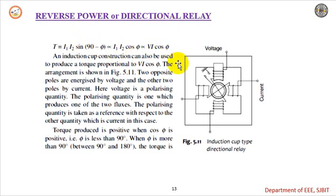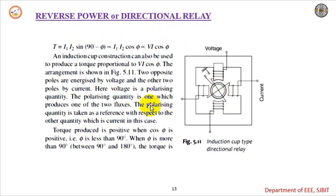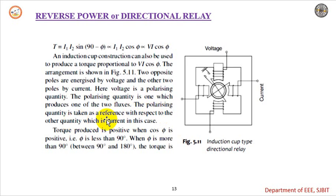We can achieve this directional relay using the induction cup type as well. The previous diagram was induction disk type; in the induction cup type construction, we can also produce the torque which is proportional to VI cos φ. The arrangement is shown here. To create two fluxes, for one pair of poles we apply voltage, and for another pair of poles we apply current. So the two opposite poles are energized by voltage, and the other two poles are energized by current. Voltage is the polarizing quantity — the quantity that produces one of the two fluxes — and it is taken as a reference with respect to the other quantity, which is current.